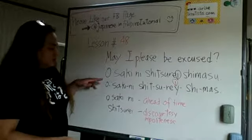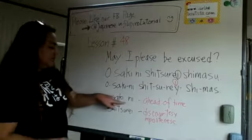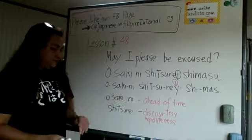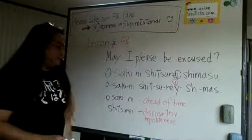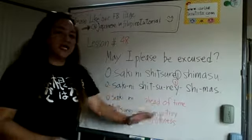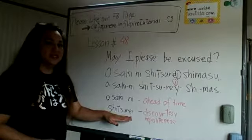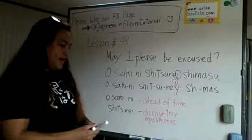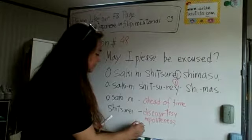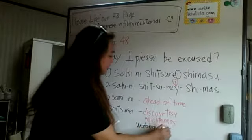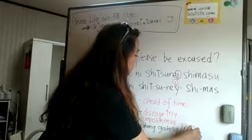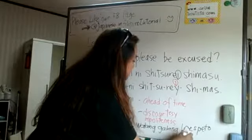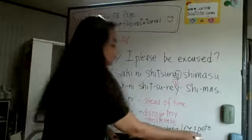Okay. Ang origin po niyan — 'osaki ni,' or 'saki ni,' is 'ahead of time.' 'Osaki ni' — 'saki' — yung nasa unahan. 'Osaki ni' is 'ahead of time,' and 'shitsurei' is 'discourtesy' or 'impoliteness' — walang galang, walang respeto. Or simply, bastos. That's not good po. Kailangan gagalang po tayo.